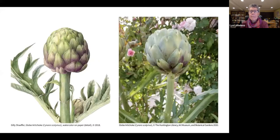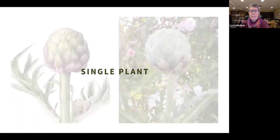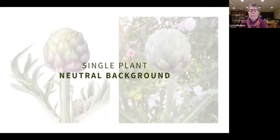Look at this artichoke from the Huntington's garden side by side with the botanical artwork of an artichoke. What similarities do you see? What differences? In this artichoke example we can see several features of botanical art. First, we see a single plant — in the photograph we can see flowers and leaves from several different plants, but in the botanical artwork the artist has only included the artichoke. We also see a neutral background. The flowers and leaves in the photo's background make it difficult to see the artichoke's features. In botanical art, artists use simple backgrounds to keep the focus on the plant. Anything included in the background must contribute to the viewer's understanding of the plant.